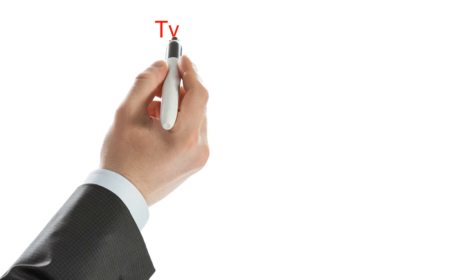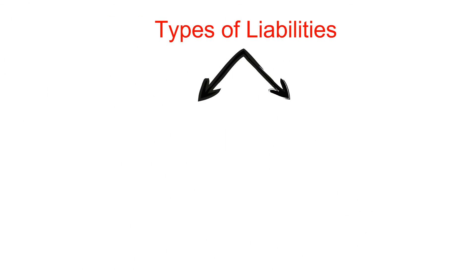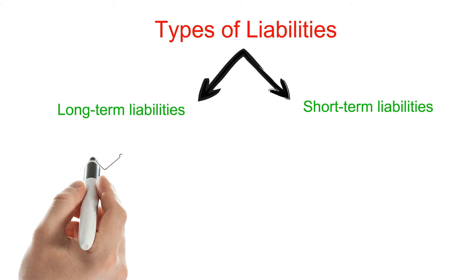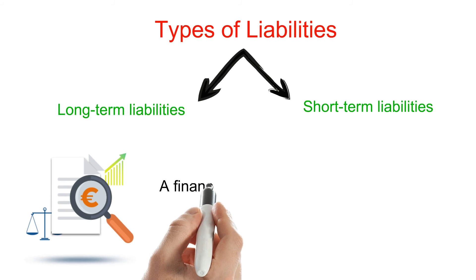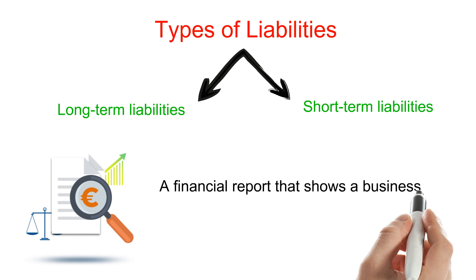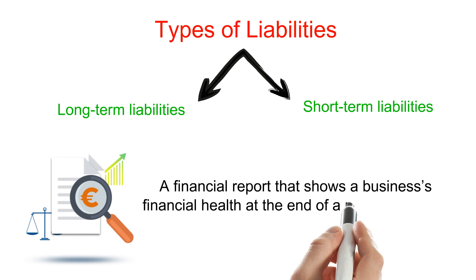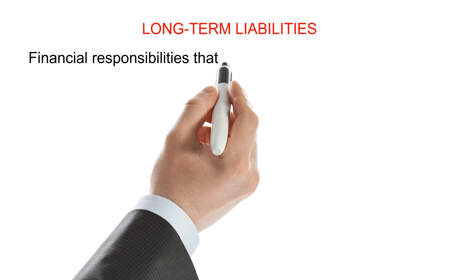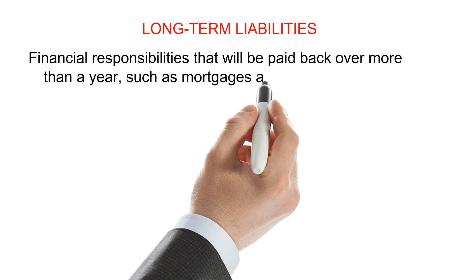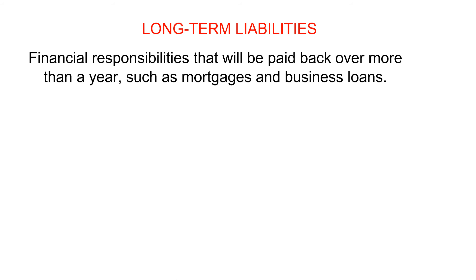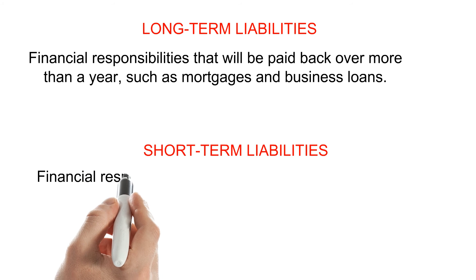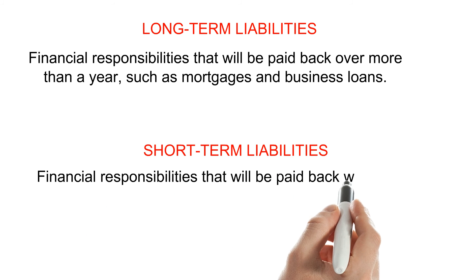Now let's look at types of liabilities. There are two main types: long-term liabilities and short-term liabilities. Both types are listed on a company's balance sheet, a financial report that shows a business's financial health at the end of a reporting period. Long-term liabilities are financial responsibilities that will be paid back over more than a year, such as mortgages and business loans. Short-term liabilities are financial responsibilities that will be paid back within a year.